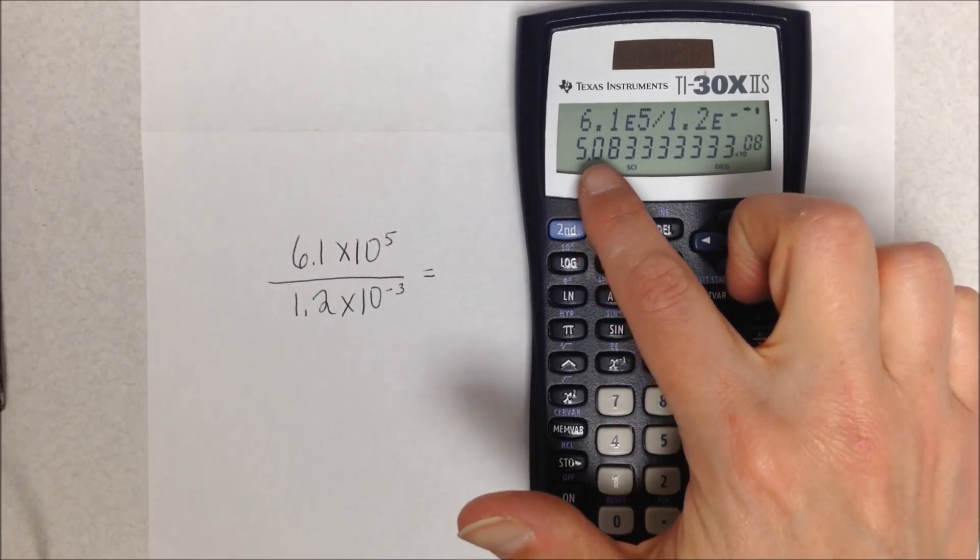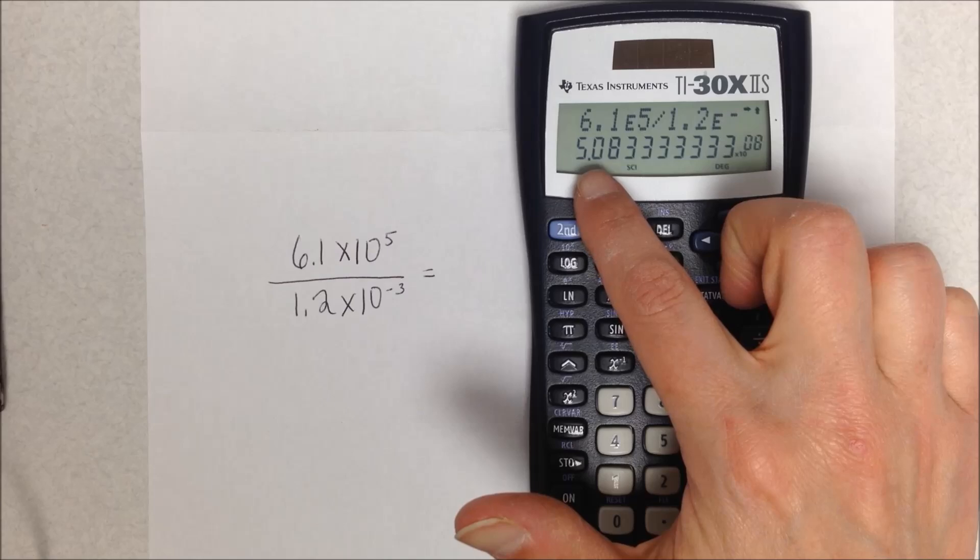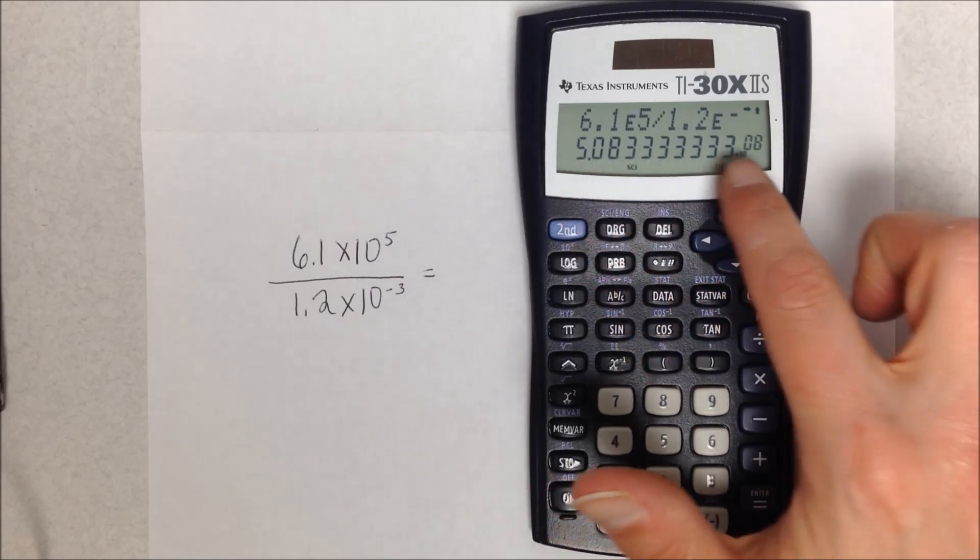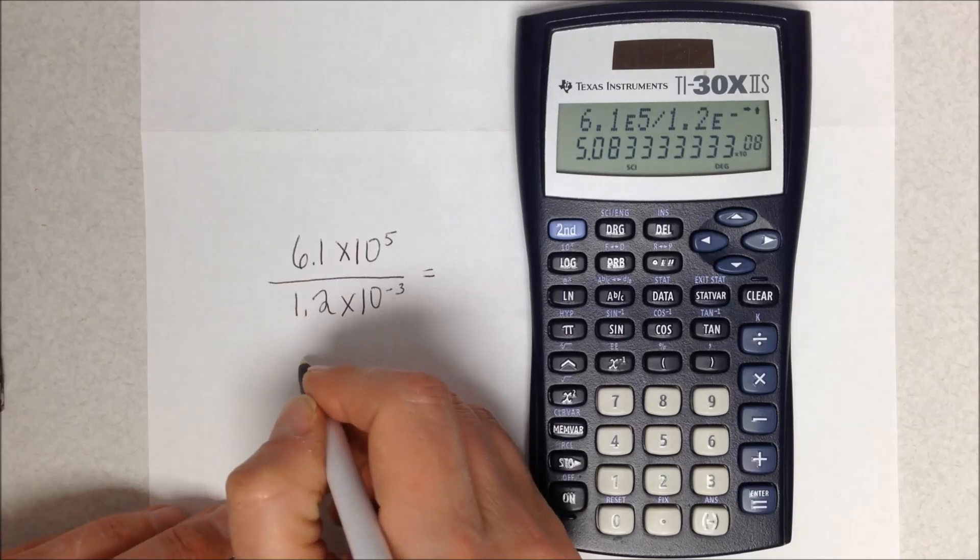So I have 5.1, because I'm going to round it to one decimal place—5.1 times 10 to the eighth. So we're going to write that down.